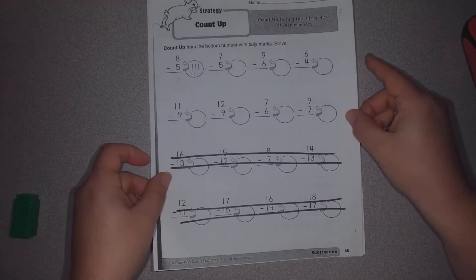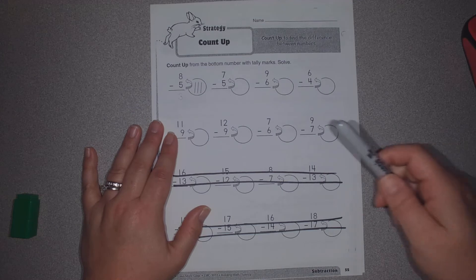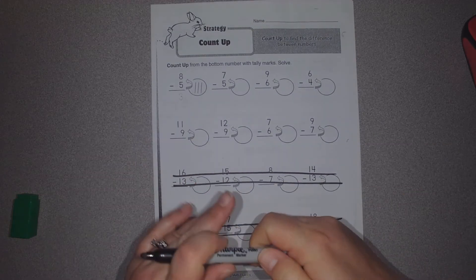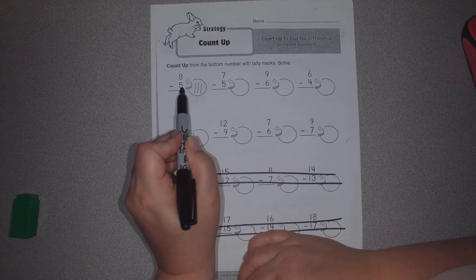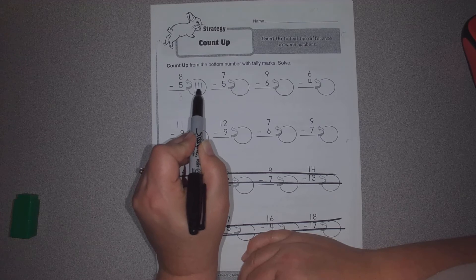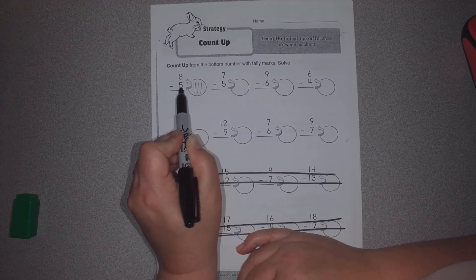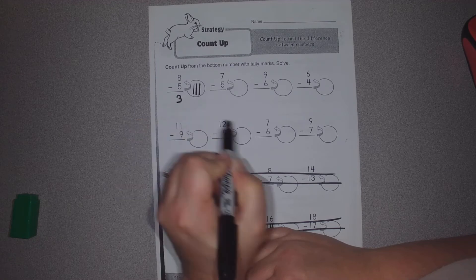On the next page, you're doing the same thing. This time what they're doing is having you make a mental note of how many jumps you make. So we have 8 minus 5. What's the difference? We're going to count up from the 5 to the 8. And we're going to make tally marks every time we count to see how many jumps we make. So we hold the 5. 6, 7, 8. How many jumps did we make? 3 jumps.